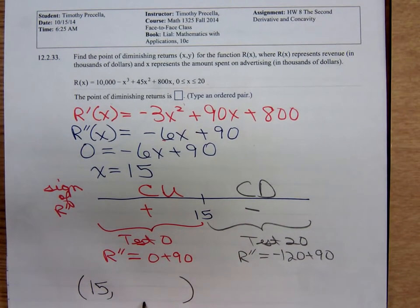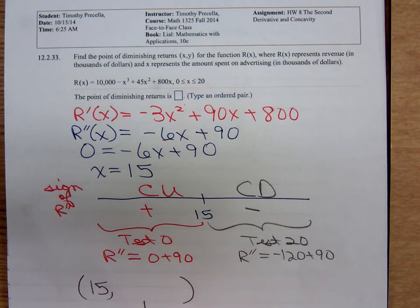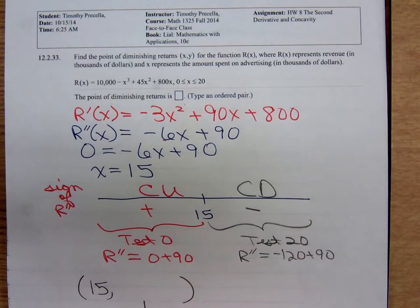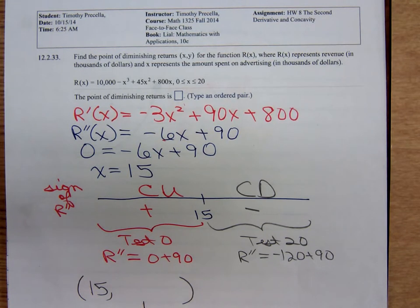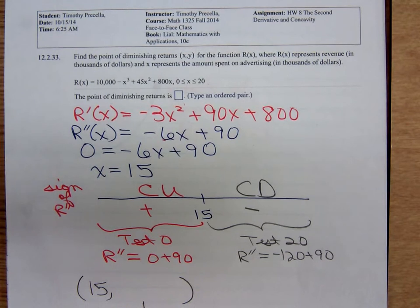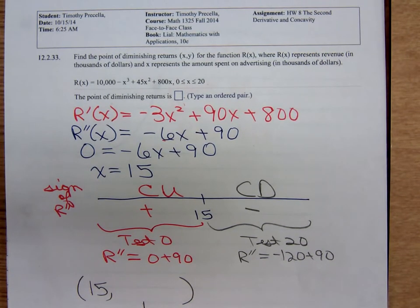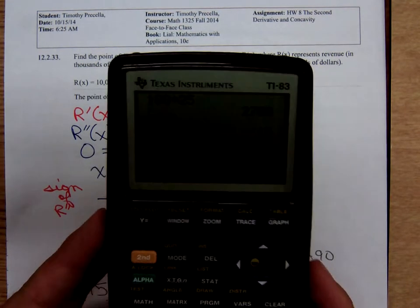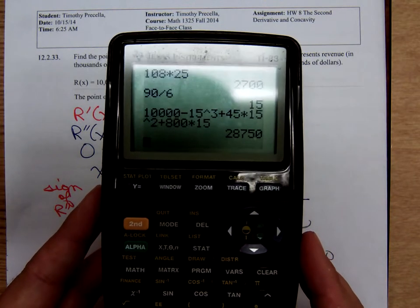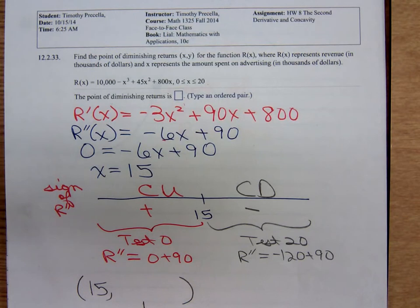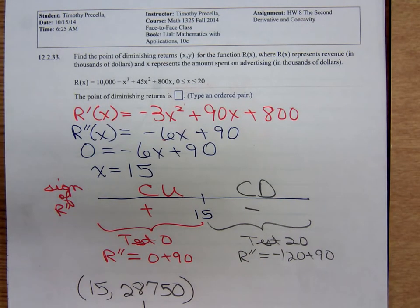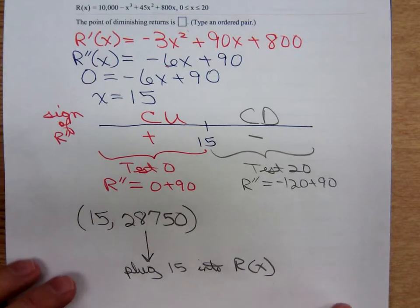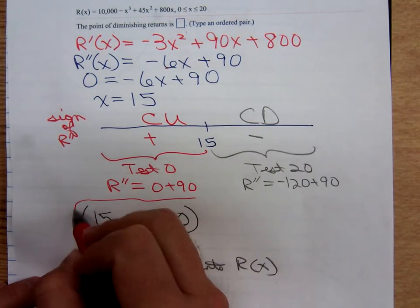So, our point of diminishing returns is at 15. And, when it typed as an ordered pair, what do we do with that 15? We have to plug that 15 into the original function. Plug 15 into R(x). Let's see if y'all can see what I have there. It looks to me like I'm getting 28,750. I plugged the 15 into the original function for my final answer.